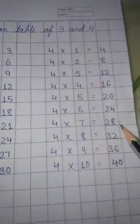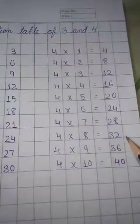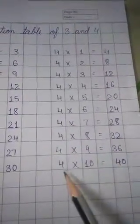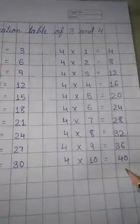4×7 is 28. 4×8 is 32. 4×9 is 36. 4×10 is 40.